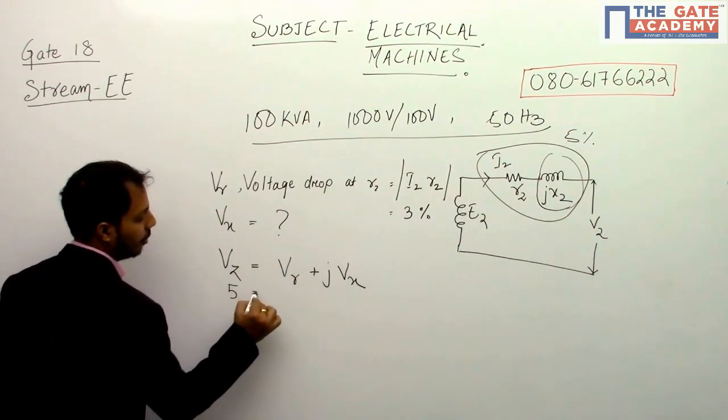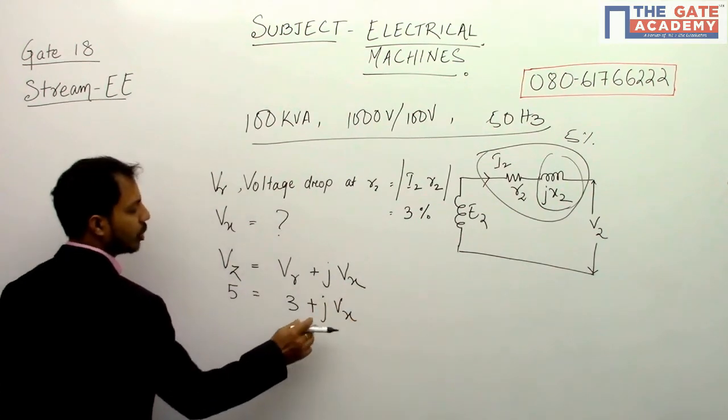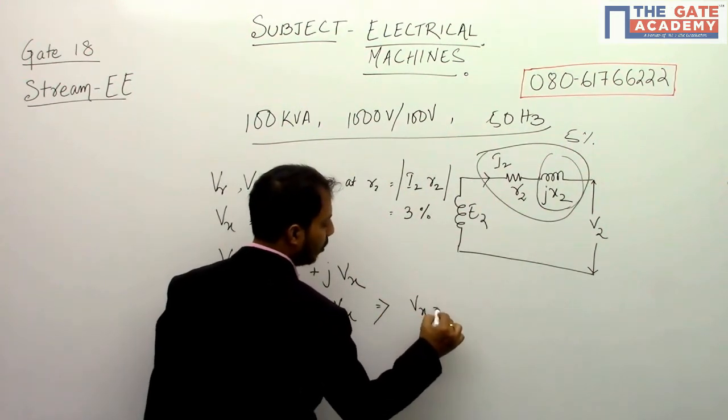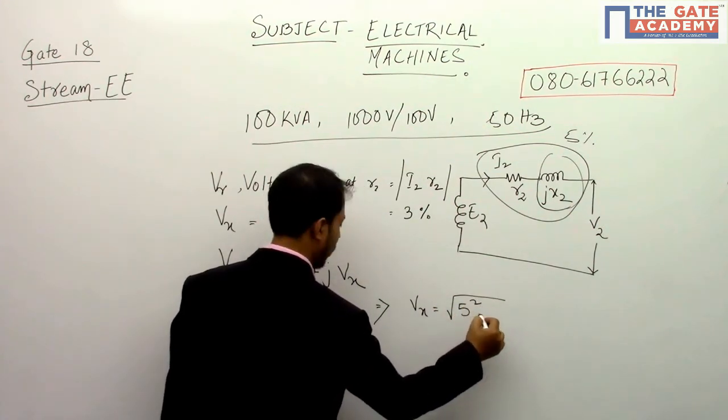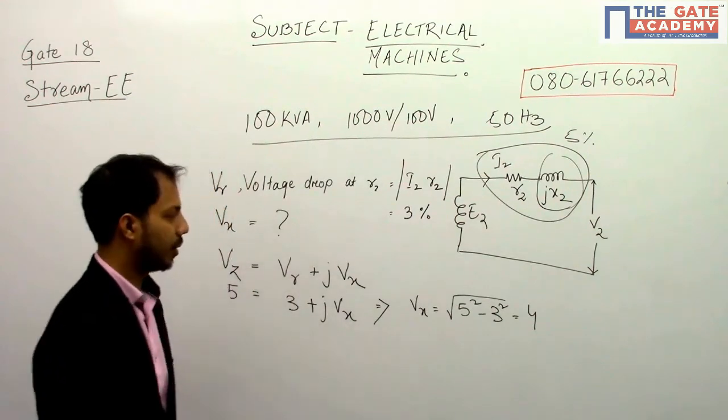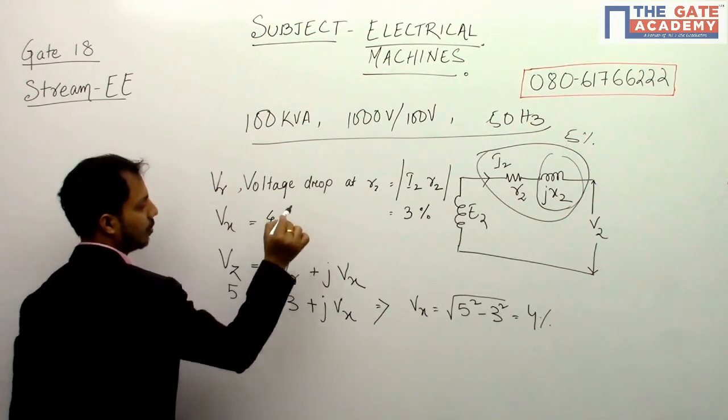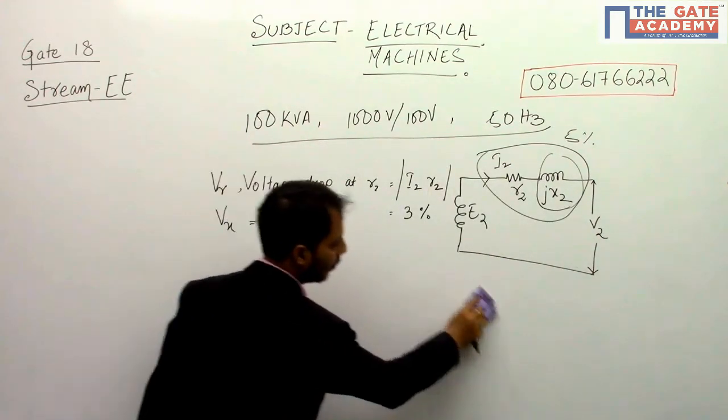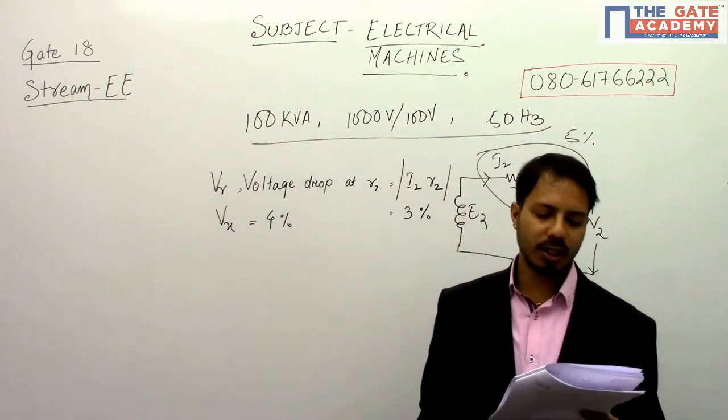Now VZ is given as 5%, VR is given as 3%. So if I need to find VX, you can easily find it out. VX will be square root of 5 squared minus 3 squared, that is 4%. So VX is 4%.